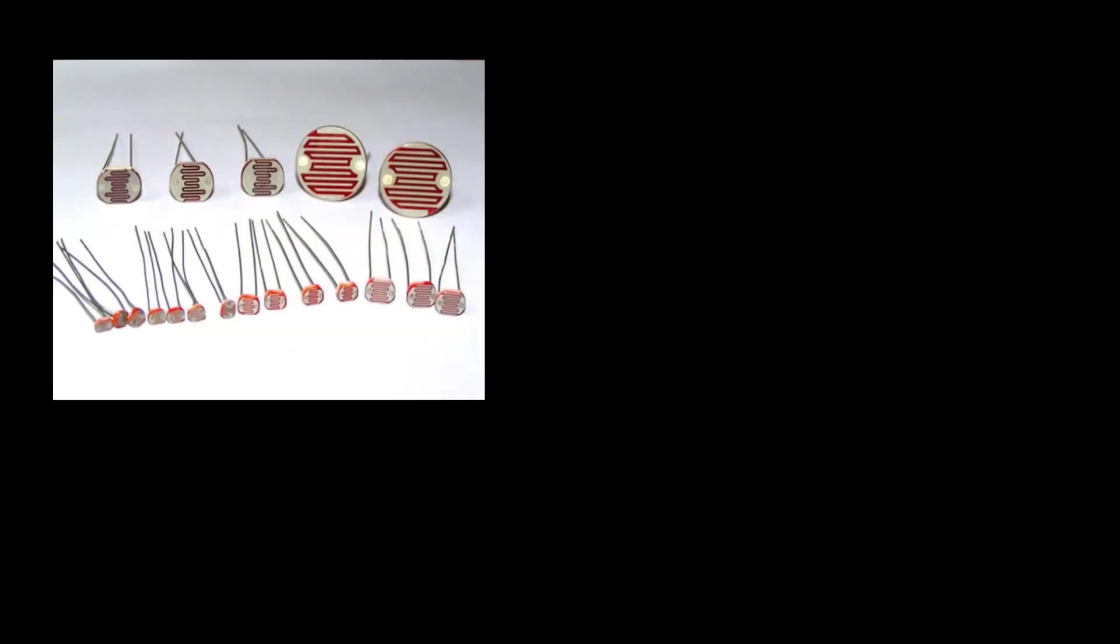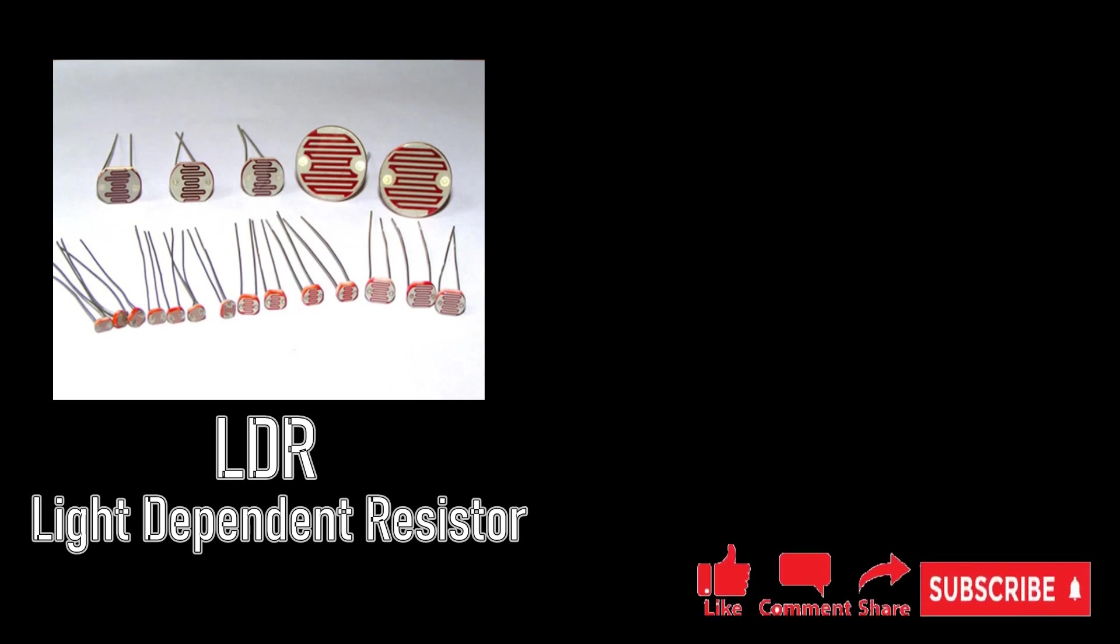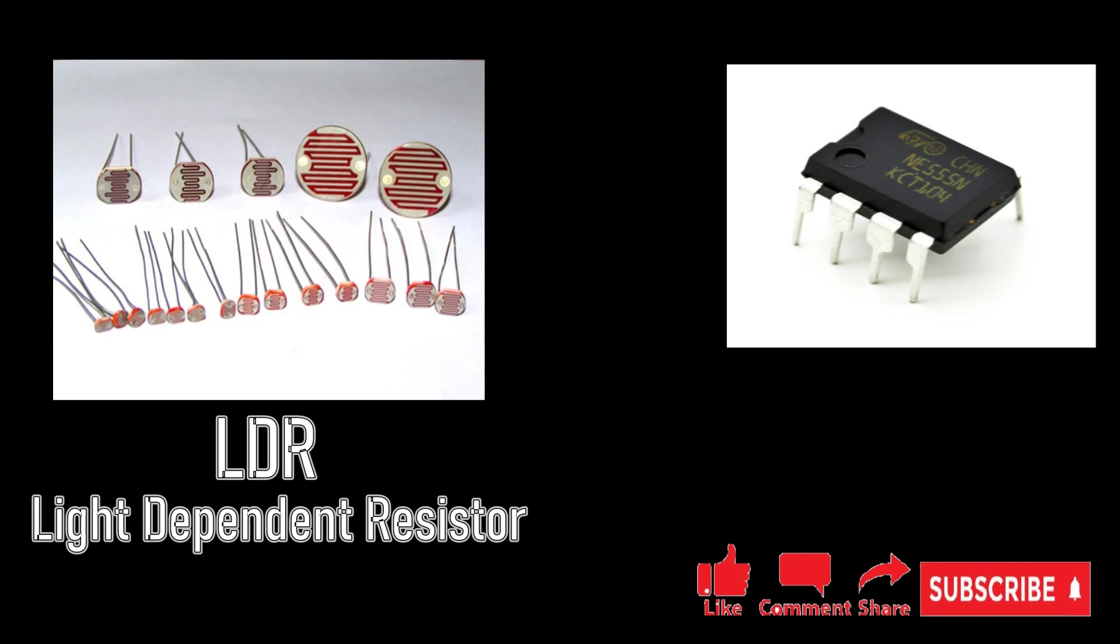Darkness detector is simply an LDR, light dependent resistor interface square wave generator. In this project the square wave generator is developed as a 555 timer IC based astable multivibrator. As this circuit is primarily based on the working principle of LDR, before going any further to understand this LDR circuit, we must get the basic details of the LDR.